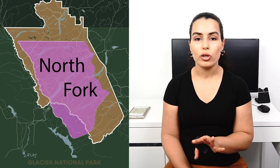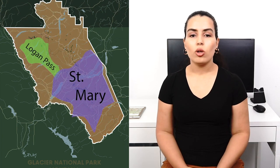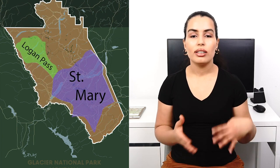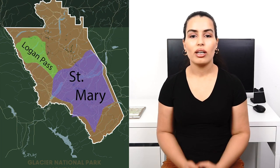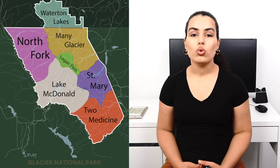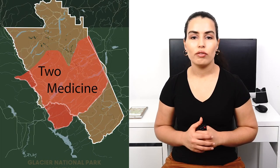The third area is North Fork — I'm not very familiar with it, so I'll put more information in the description box. Next is the Saint Mary and Logan Pass area, located along the continental divide. Logan Pass is also the highest point of the Going-to-the-Sun Road, which I'll talk about in a bit. It's a beautiful area that's really worth exploring and doing some hikes in.